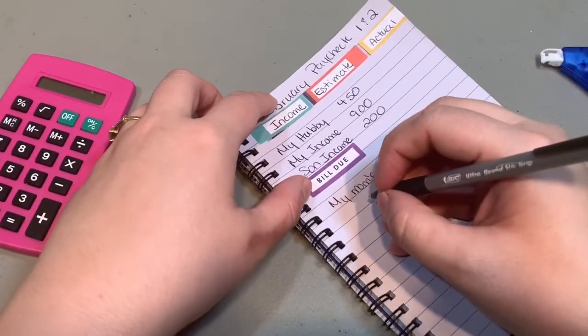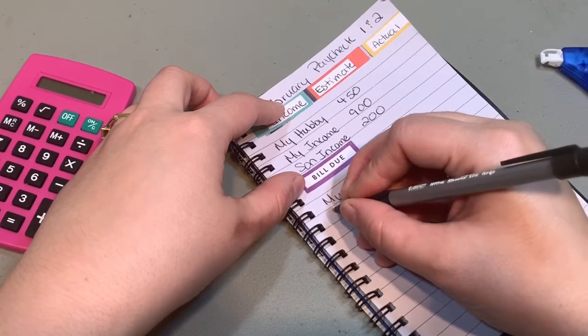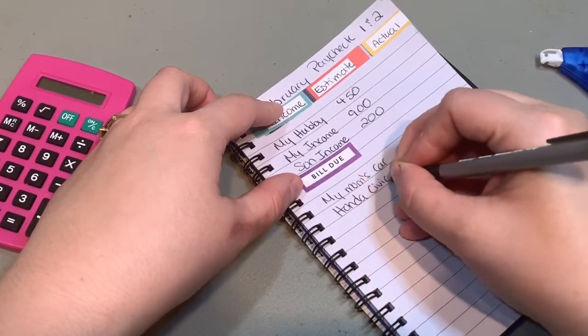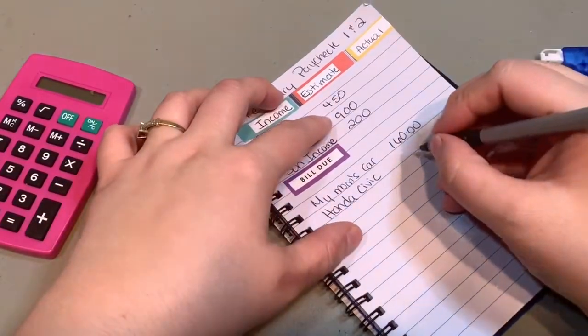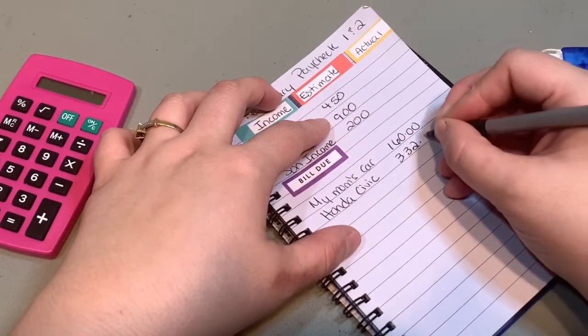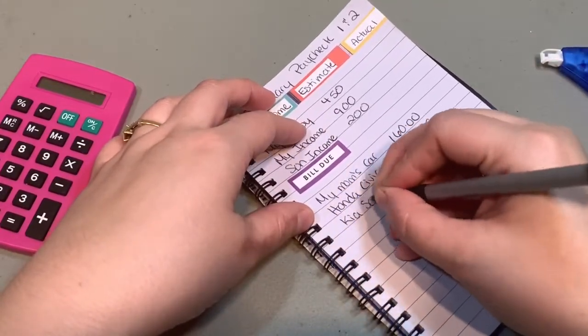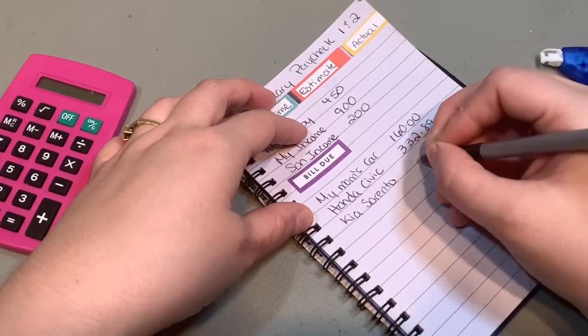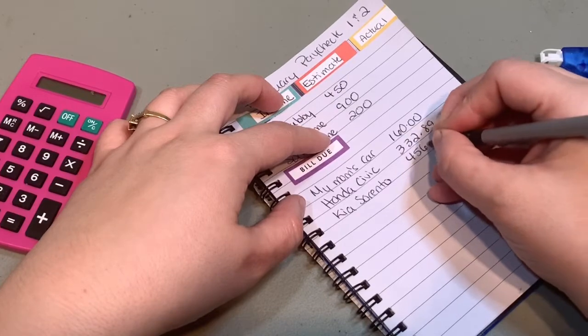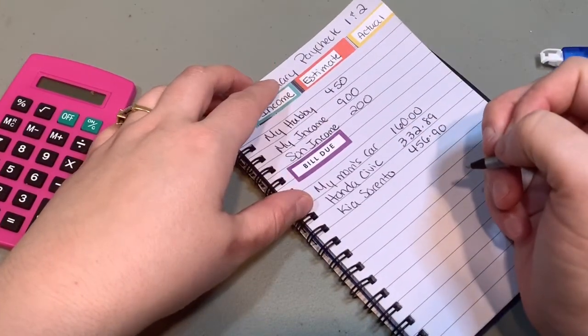And then we also have the Honda which is my husband's car, the Honda Civic, and that car is $332.89. And then I have my Kia Sorento and that is $456.90.